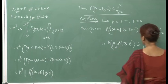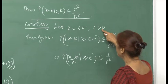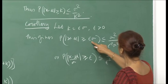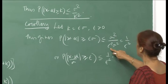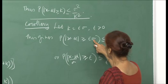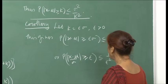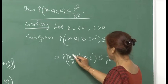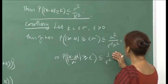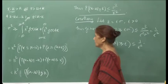An immediate corollary: if we put k = εσ, where ε is some positive number, then Chebyshev's inequality becomes P(|x − μ| ≥ εσ) ≤ σ²/(εσ)² = 1/ε². Dividing both sides by σ, we get P(|x − μ|/σ ≥ ε) ≤ 1/ε², which is a simpler version of Chebyshev's inequality in terms of the standardized variable.